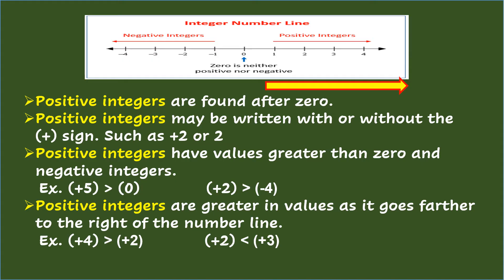Example: (+5) > (0). (+2) > (-4). Positive integers are greater in values as it goes farther to the right of the number line. Example: (+4) > (+2). (+2) < (+3).